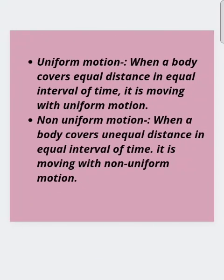There are two types of motions: uniform motion and non-uniform motion. When a body covers equal distance in equal intervals of time, it is moving with uniform motion. And when a body covers unequal distance in equal intervals of time, it is moving with non-uniform motion.